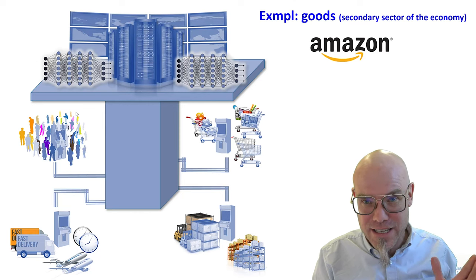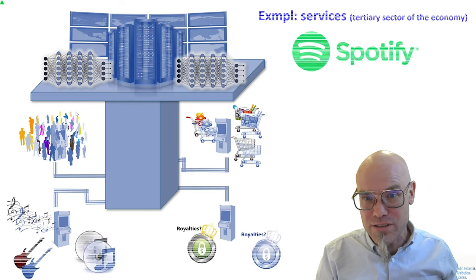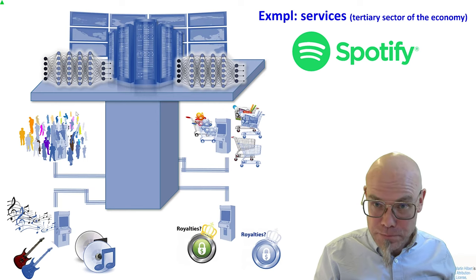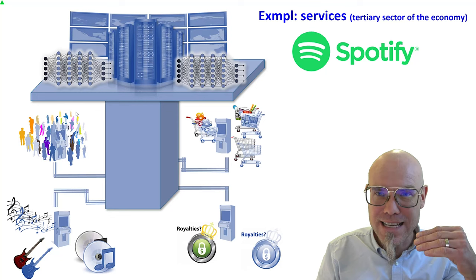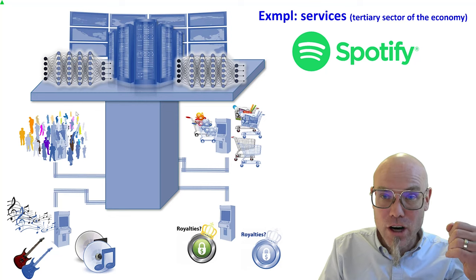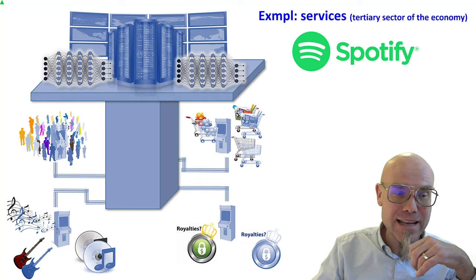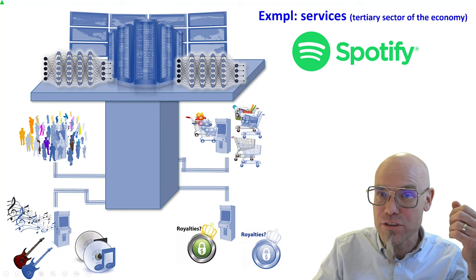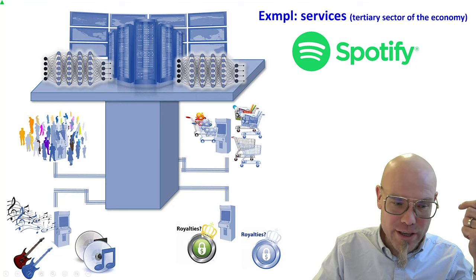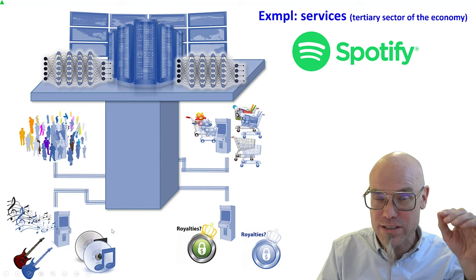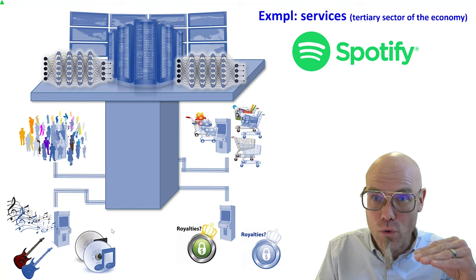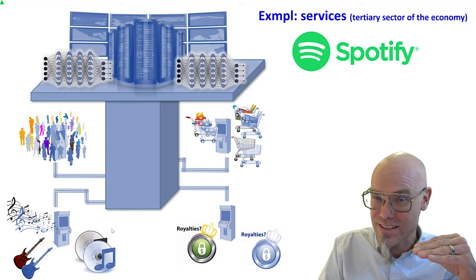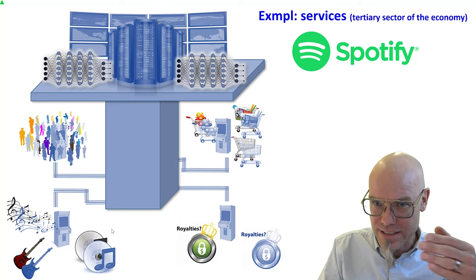This is an example from the secondary sector of the economy — goods. It also works the same for services. Let's look at the tertiary sector, let's look at Spotify. Spotify basically has a digital representation of the music sector. It has a digital twin of the listeners, the consumers, their music habits, royalties, and different music genres. Spotify does not necessarily own the music, same as Amazon does not necessarily own the products that it trades.